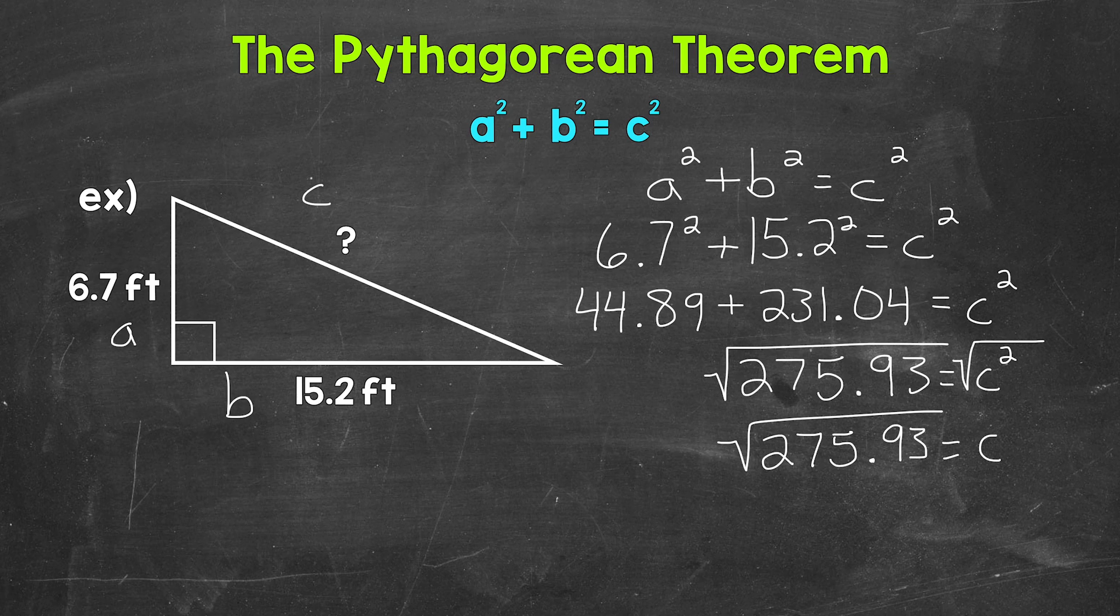Now we can write that square root as an approximate rounded decimal. The square root of 275.93 is irrational. The decimal never stops and it doesn't repeat. So let's round it. Since the side lengths of the right triangle go to the tenths place, let's round this decimal to the tenths place.